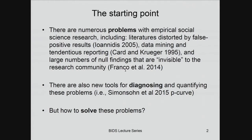The starting point for all this is a growing recognition in the social sciences — not just in economics, but in psychology, political science, and other fields — that there are some pretty pervasive problems with the research that's being produced. There's more and more evidence that whole literatures are maybe full of false positives, or there's a fear that lots of results that we think of as solid are really just false positives.